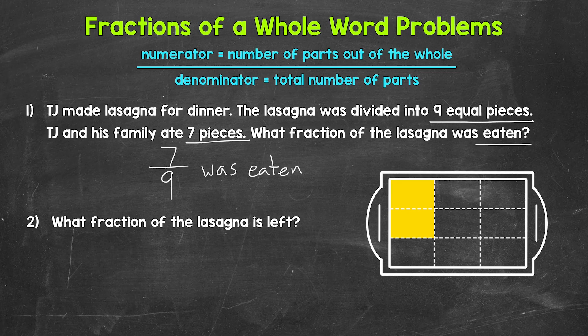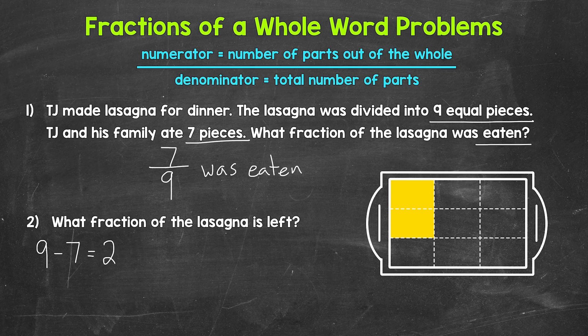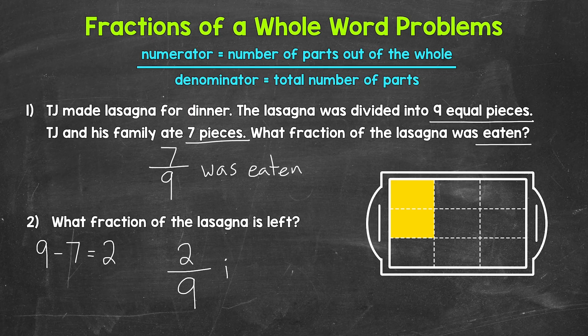Let's move on to number two: what fraction of the lasagna is left? If there were nine total pieces and seven were eaten, we can figure this out by doing nine total pieces minus the seven pieces that were eaten, which gives us two pieces left. Now we need a fraction. The denominator is nine again, because that's the total number of pieces. And our numerator is two — the number of pieces left. Two pieces out of the nine total pieces are left. So our fraction is two ninths. Two ninths of the lasagna is left.